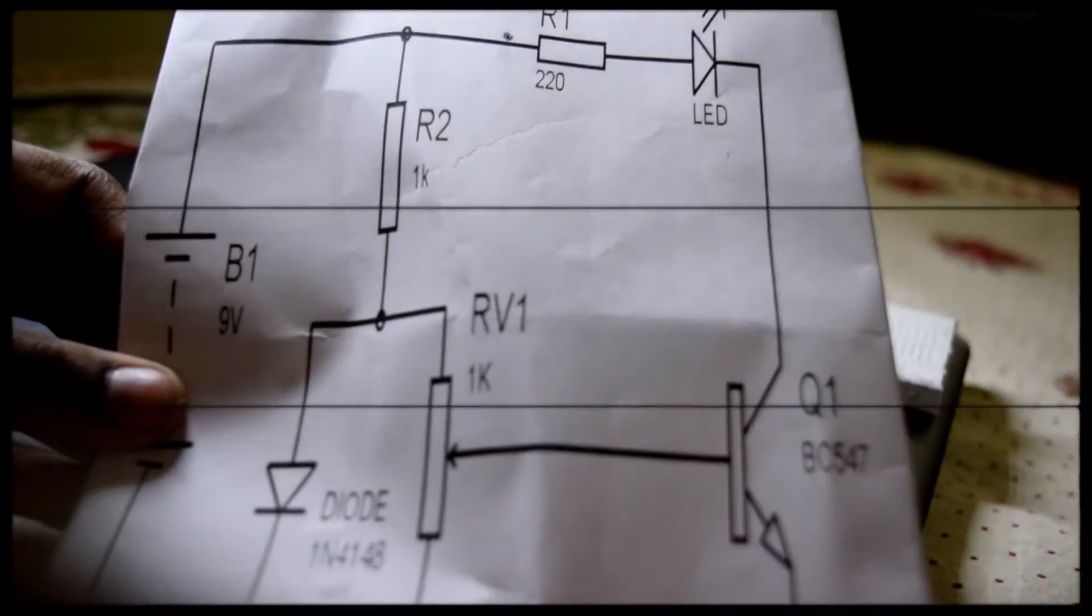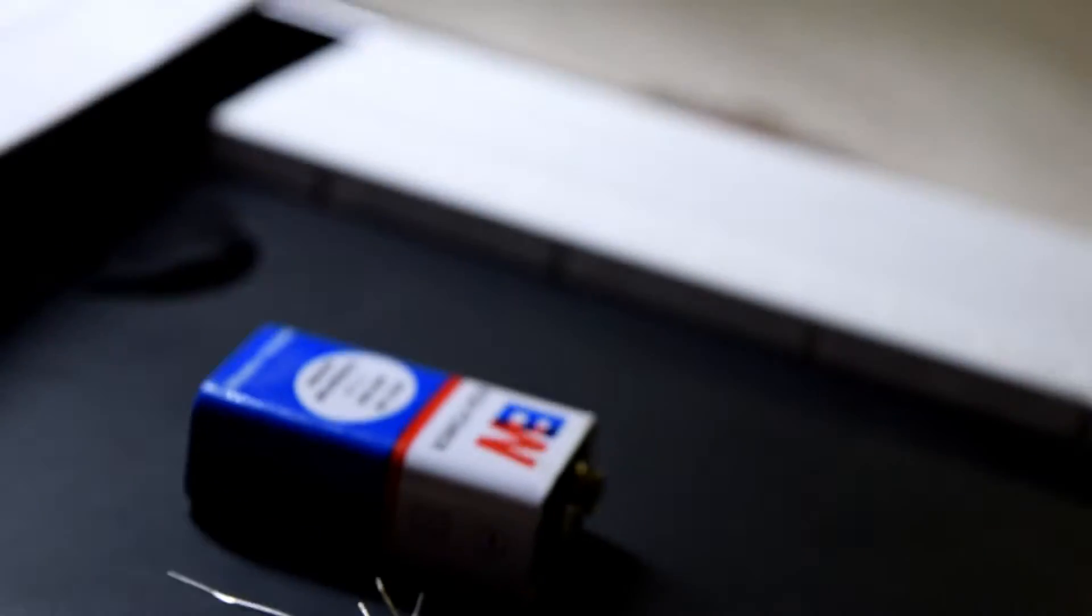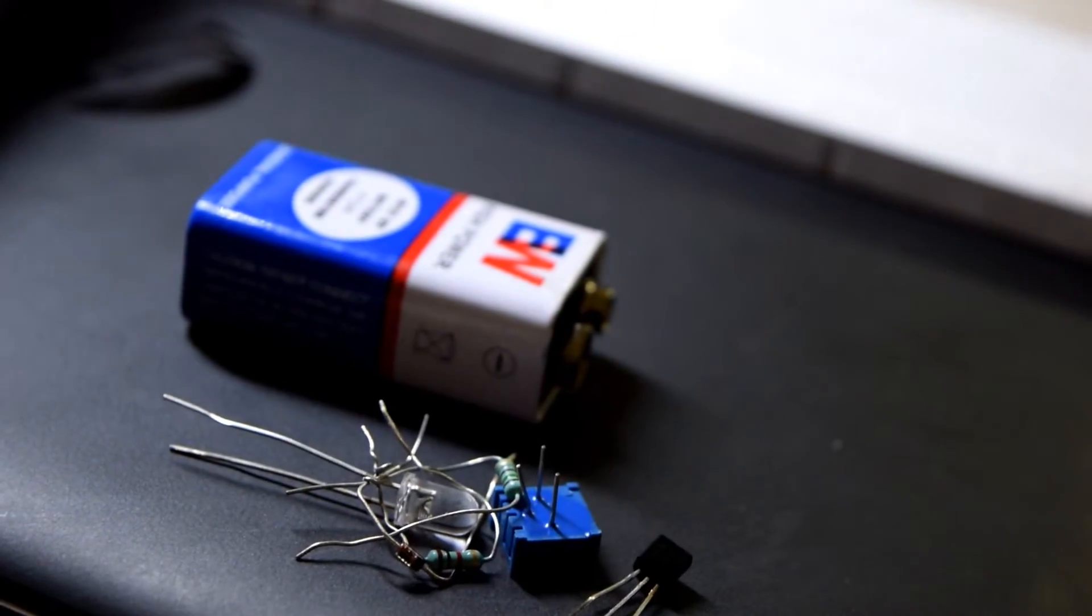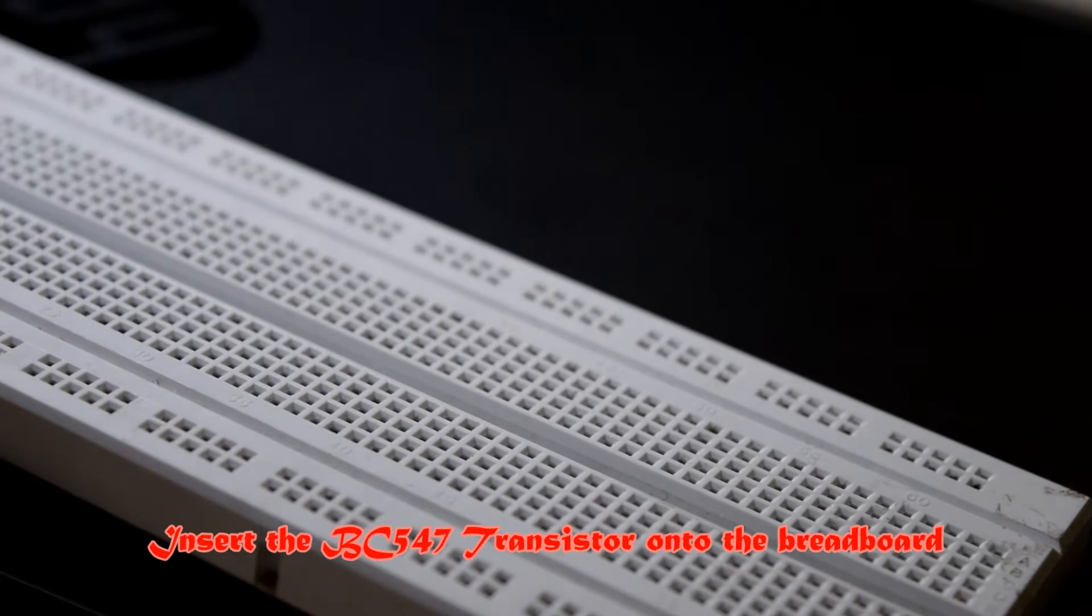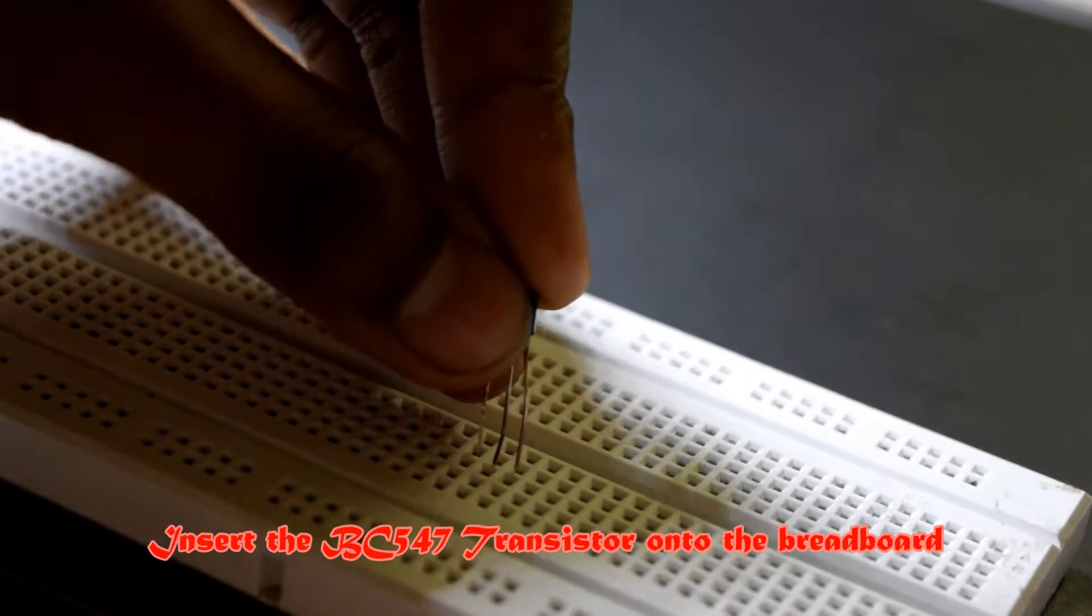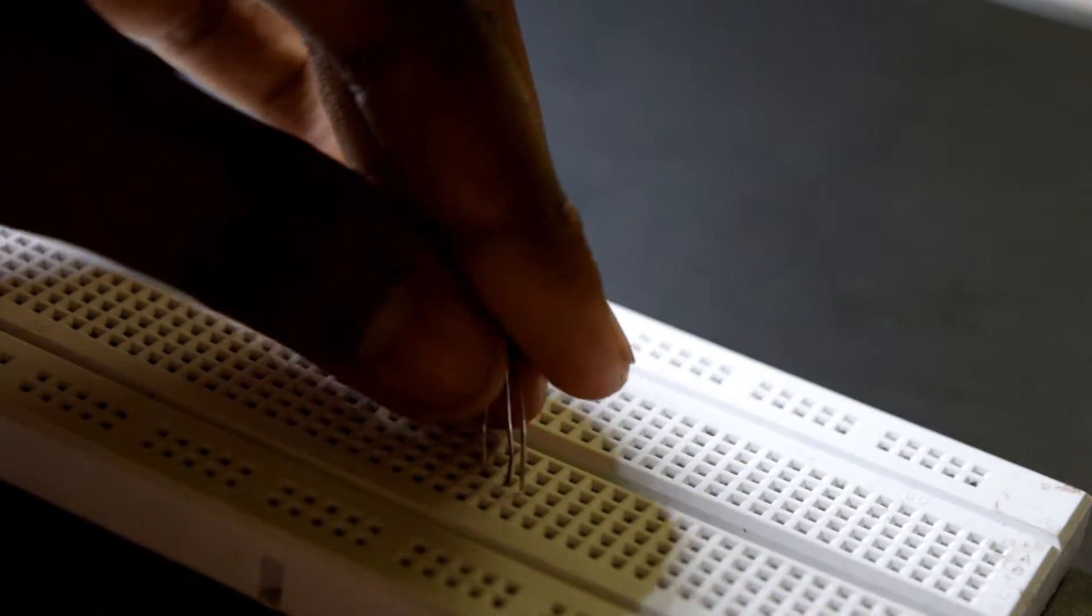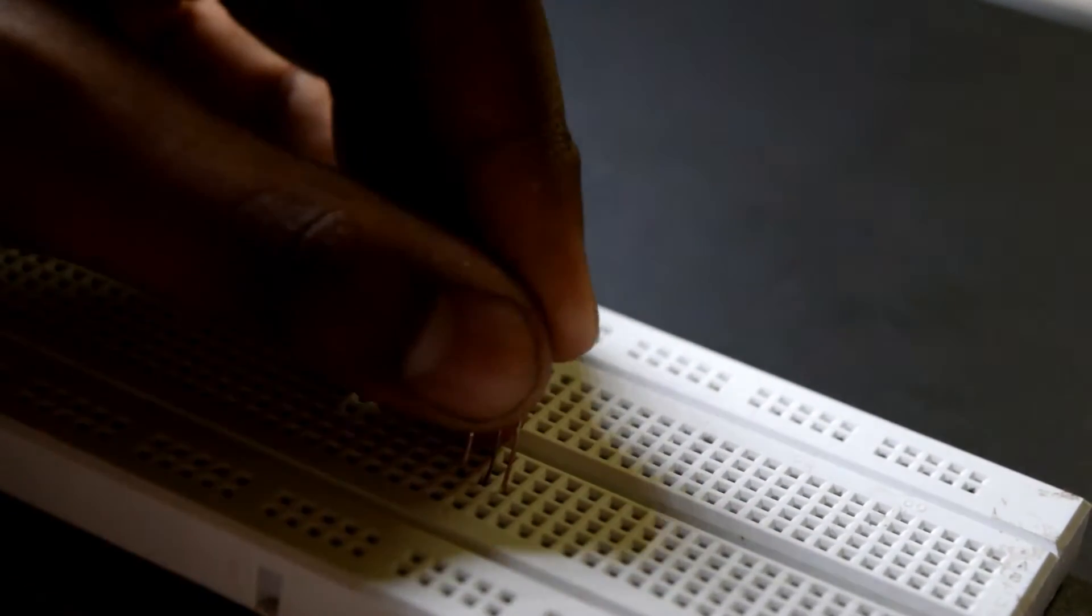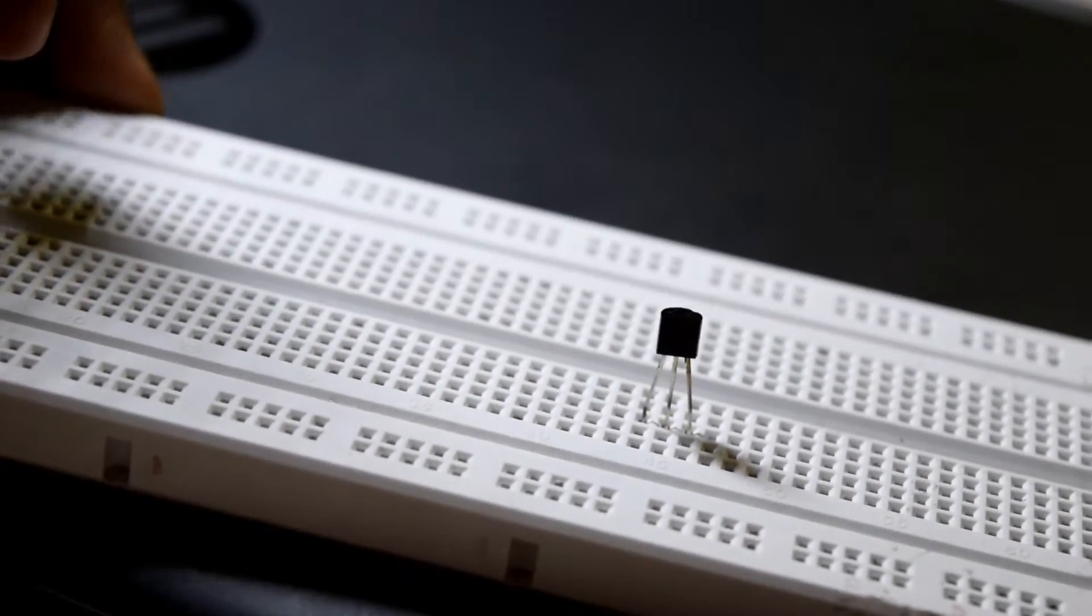Let's get started making it. Let me bring the breadboard. The first step will be inserting the most main component, that is the transistor, inserting it into the breadboard. We just insert it on the breadboard like this.